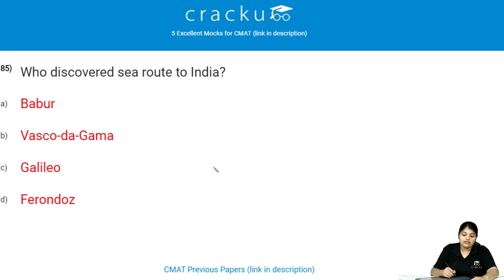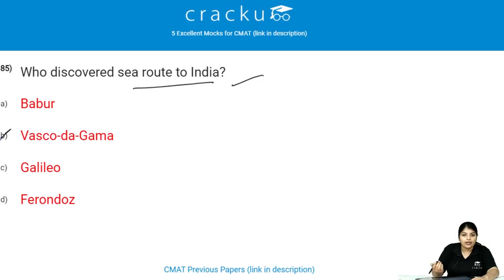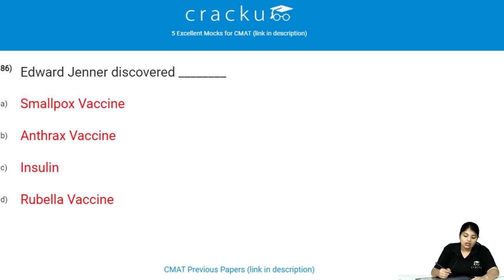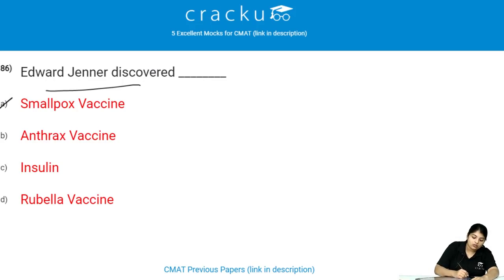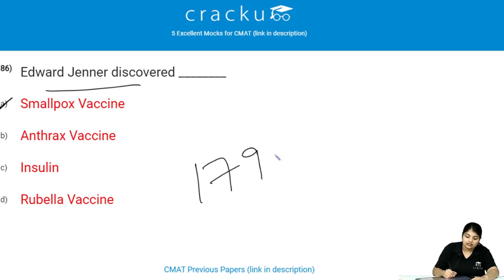Who discovered the sea route to India? Vasco da Gama discovered the sea route to India. Edward Jenner discovered the smallpox vaccine in the year 1796.